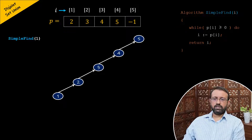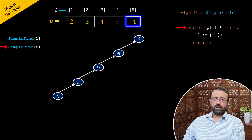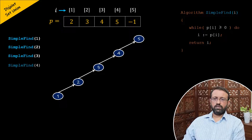Let us perform the next find operation to find element two using the simple find algorithm, passing parameter i as two. The algorithm has the while loop with the condition p of i greater than or equal to zero. In this case i is two, and the while loop will again run until i becomes five and returns index five. Similarly, for any value of i in subsequent sequences, the while loop will run until i becomes five and returns the root.